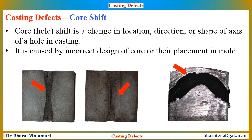Core shift is similar to mould shift, but it is the core that is misaligned — not the mould. Core shift is usually reflected as a vertical displacement. It is a change in location, direction, or shape of the axis of the hole in the casting. It is caused by incorrect design of cores or their improper placement in the mould.